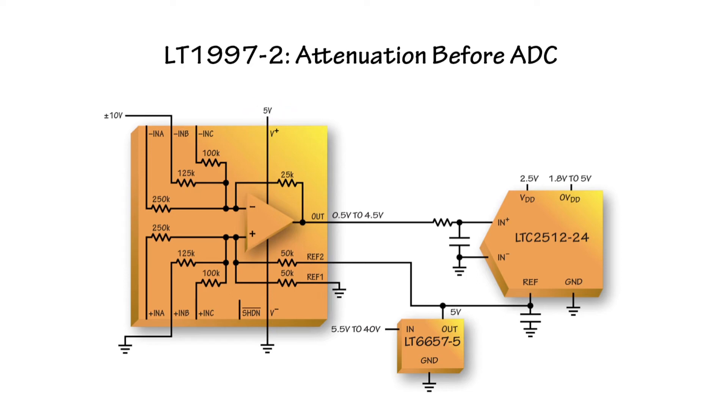In this example, the ADC full-scale range is defined by a precision voltage reference, the LT6657, which features a maximum temperature drift of 1.5 parts per million per degree C.